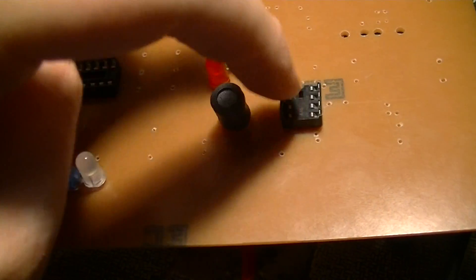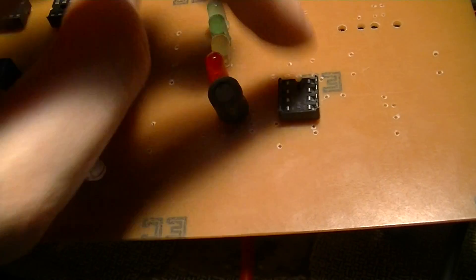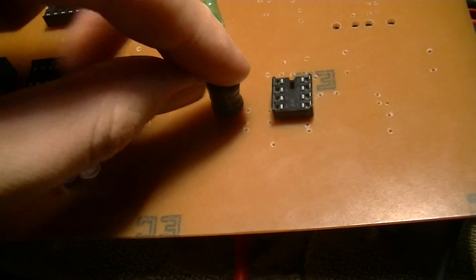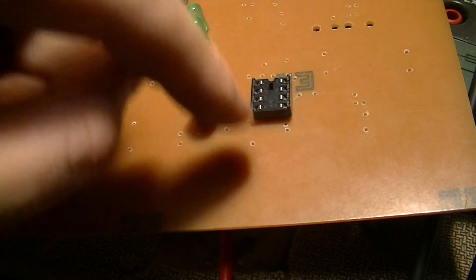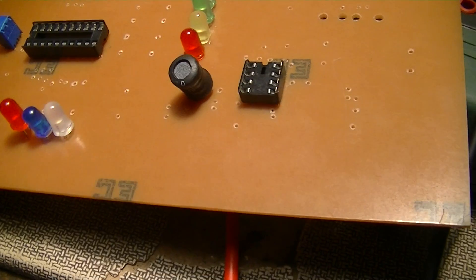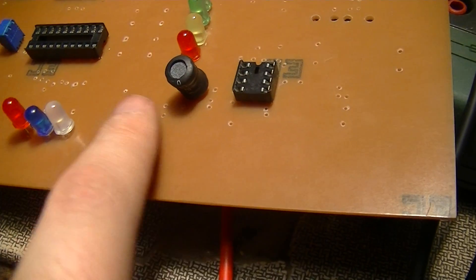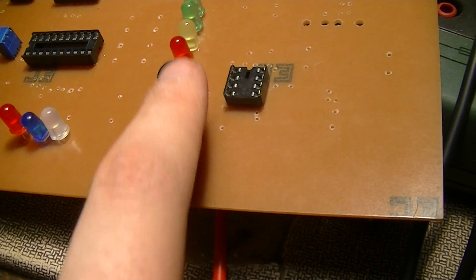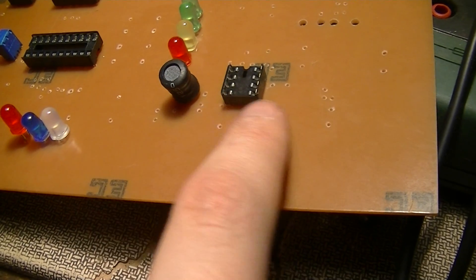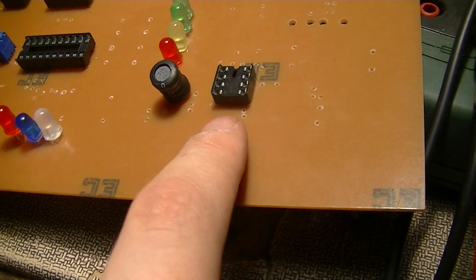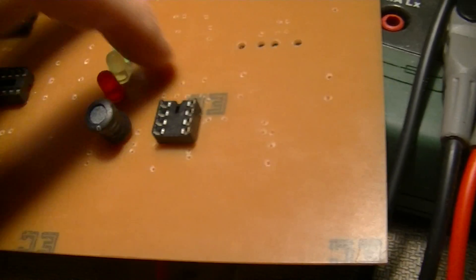Over here is the 5 volt buck converter section. That's the MC34063. There's the inductor. Haven't fitted a lot of the components for it yet, but there's spaces for capacitors and potential measurement resistor divider.